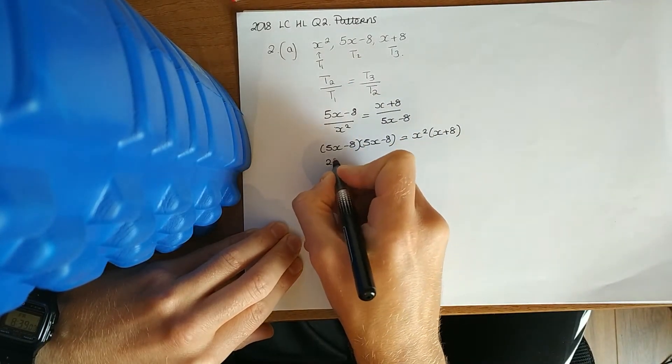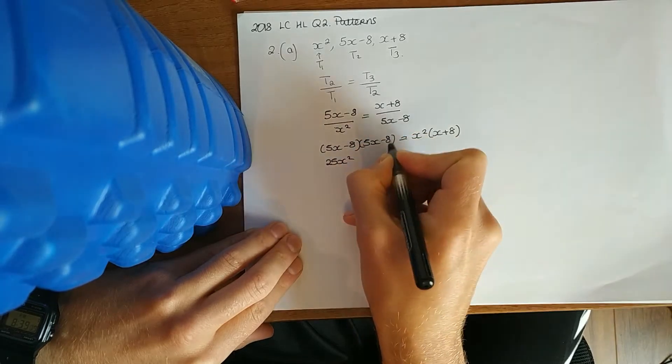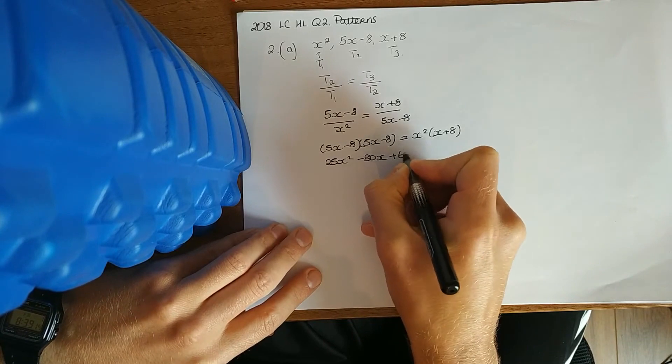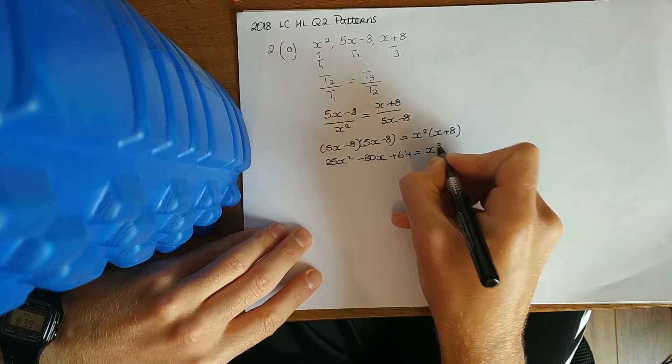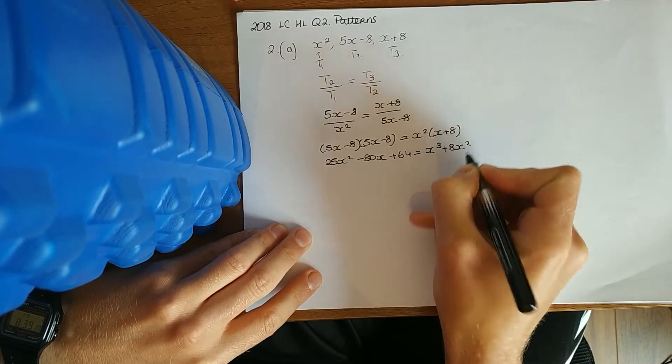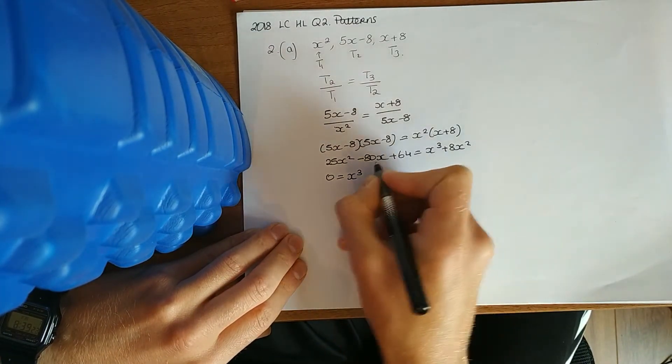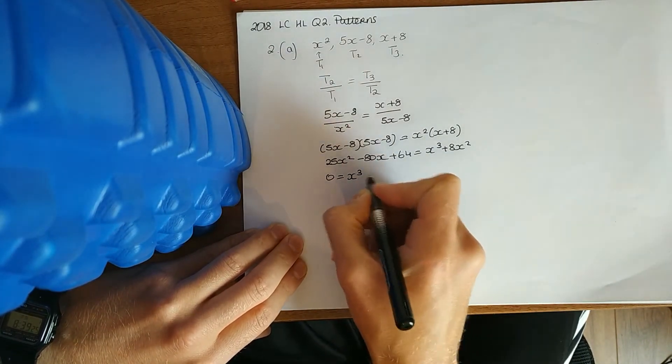Multiply that out, multiply that out: 25x squared minus 40x minus 40x minus 80x plus 64 to x cubed plus 8x squared. Then tidy it a bit. x cubed minus 17x squared gives me the answer now.